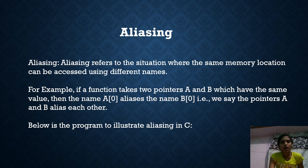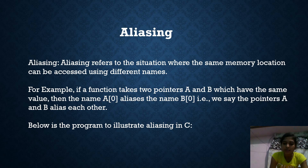Aliasing is a reference to the situation where the same memory location can be accessed using different names. For example, if a function takes two pointers like a and b which have the same value, then the name a aliases the name b, i.e., we say the pointers a and b alias.